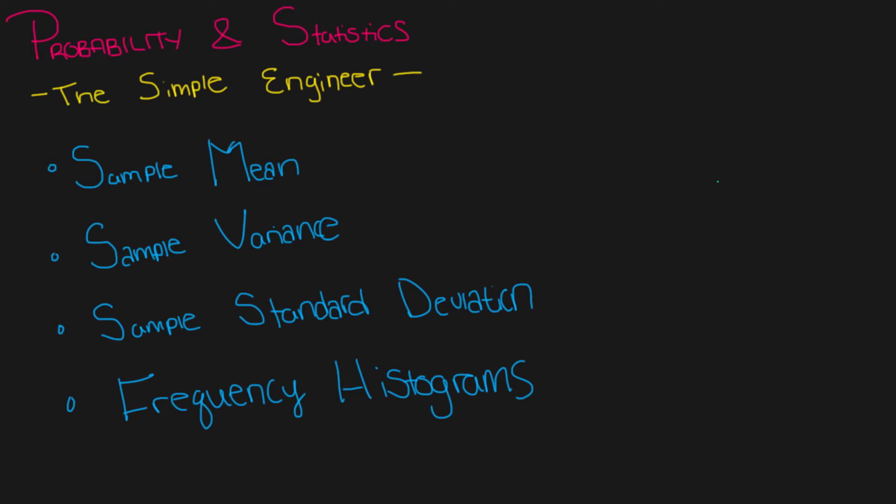Welcome to another video by The Simple Engineer. Today we're going to delve into probability and statistics. I've picked out four main topics that introduce the idea of probability and stats: calculating the sample mean, which estimates the average from a population; sample variance, which represents the spread or variation of data; sample standard deviation; and frequency histograms, which visually represent how often data occurs in certain sets.